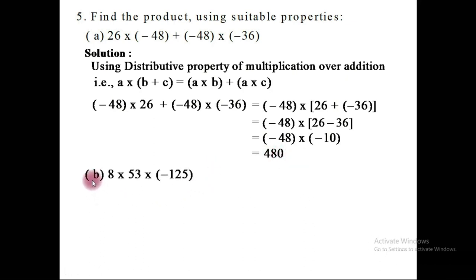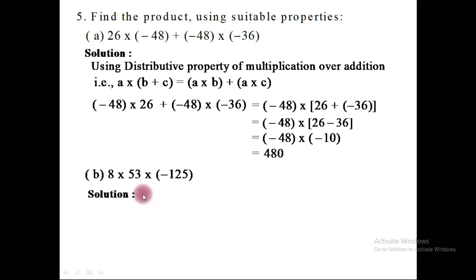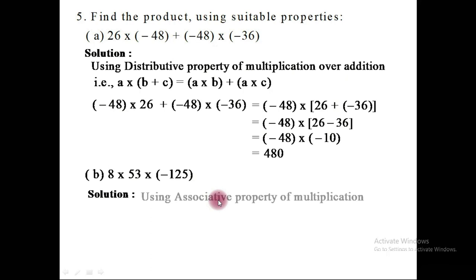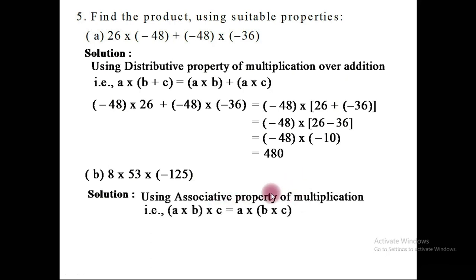Sub number B: 18 into 53 into minus 125. Here we can find the product of the given integers using the associative property of multiplication. This is the order of the associative property of multiplication.